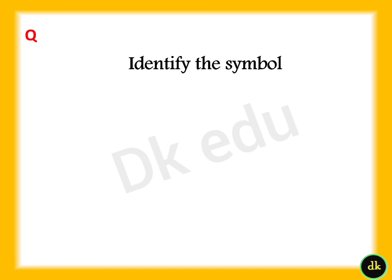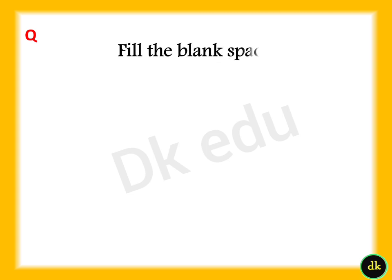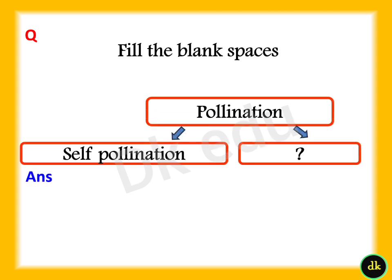Identify the symbol. Answer: Option D, Buzzer. Fill in the blank spaces. Answer: Cross pollination.